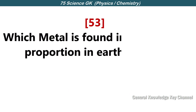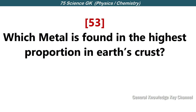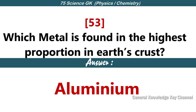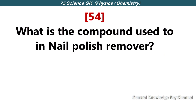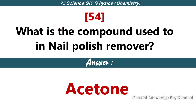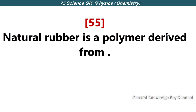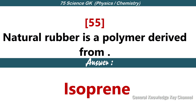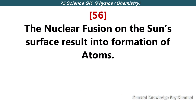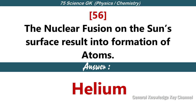Which metal is found in the highest proportion in earth's crust? Aluminium. What is the compound used in nail polish remover? Acetone. Natural rubber is a polymer derived from isoprene. Nuclear fusion on the earth's surface results in the formation of helium atoms.